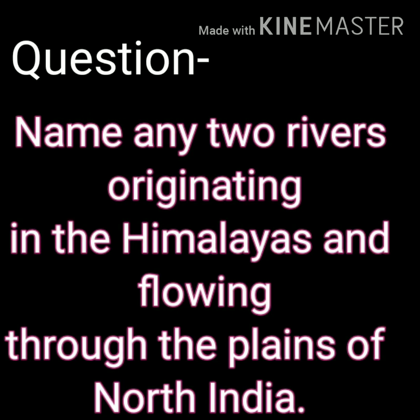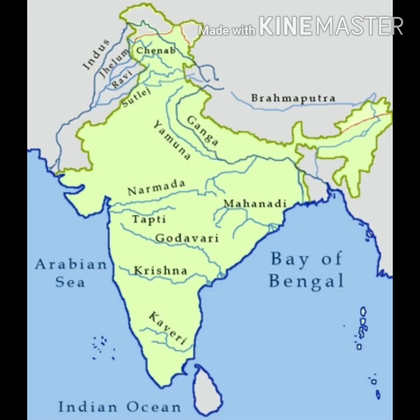In your previous chapter, you have studied about the rivers that originate from the glaciers. Now try to answer this question: name two rivers that originate in the Himalayas and flow through the northern plains of India. Yes, you guessed it right — the rivers are Ganga, Yamuna and Brahmaputra.